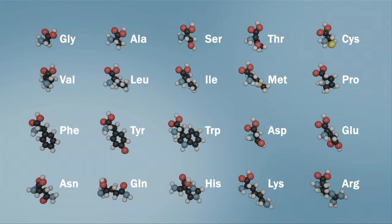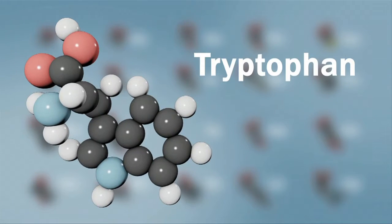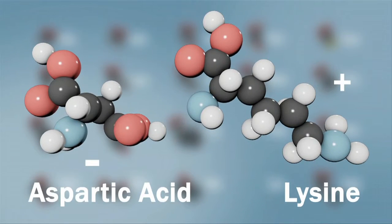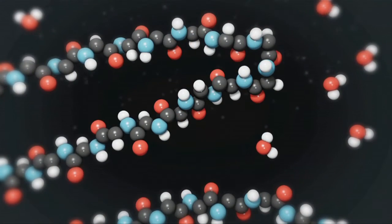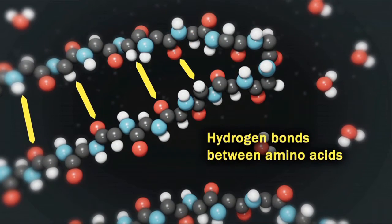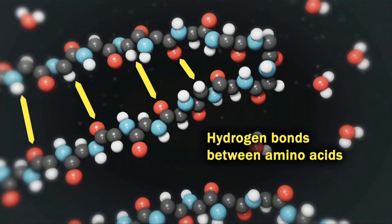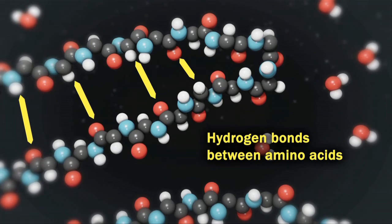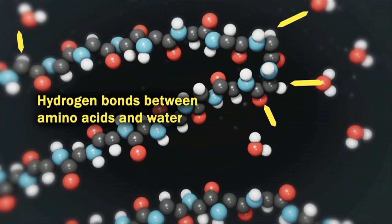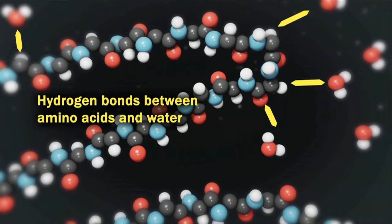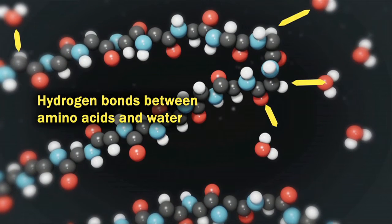There are 20 different amino acids found in proteins. Each has a unique set of chemical properties. Some are polar, some are non-polar, and some can have a negative or positive charge. A protein's shape comes about due to the interaction of amino acids with each other and with the solvent surrounding the protein, usually water.